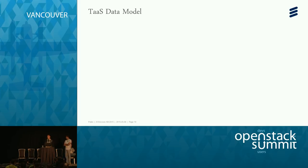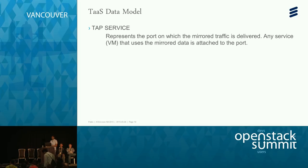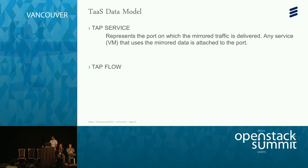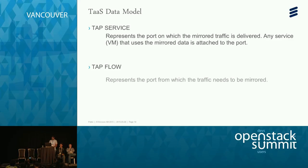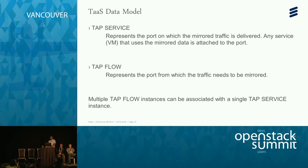In terms of how the service is exposed to tenants, there is a simple data model with two essential resources. A tap service represents the destination port to which mirror traffic is sent. A tap flow represents the source port from which you want to mirror traffic. There is an N-to-one relationship from tap flow to tap service — you can associate multiple tap flows to a single tap service, allowing mirroring from multiple Neutron ports to a single Neutron port.